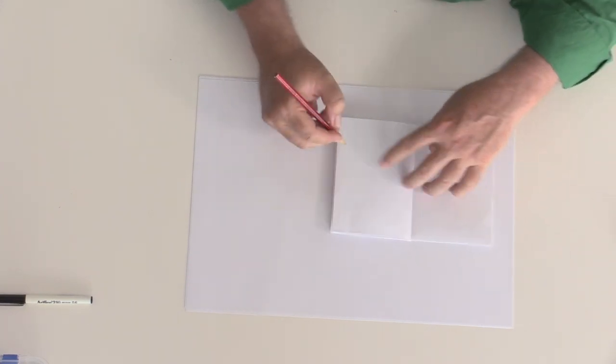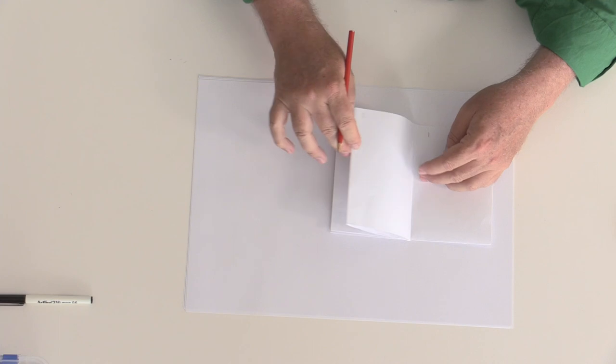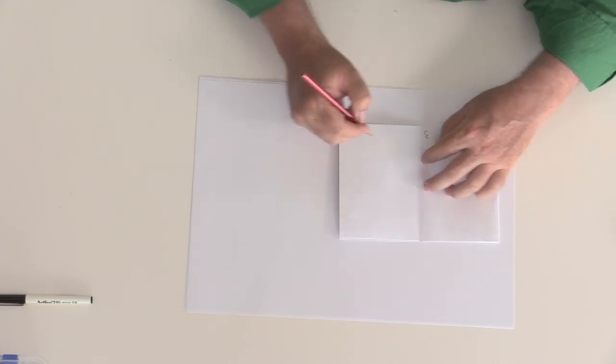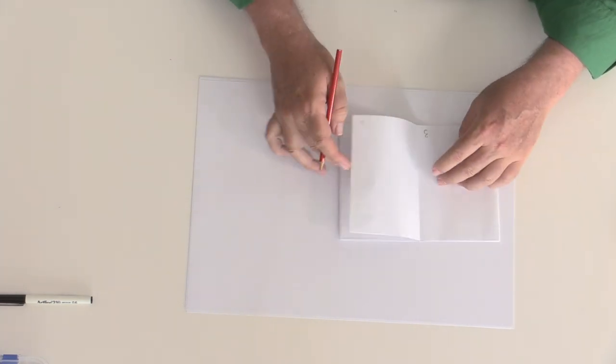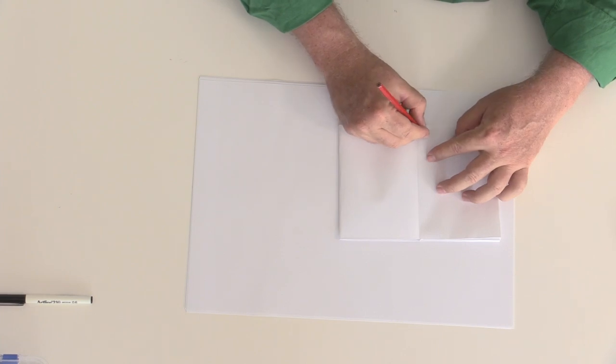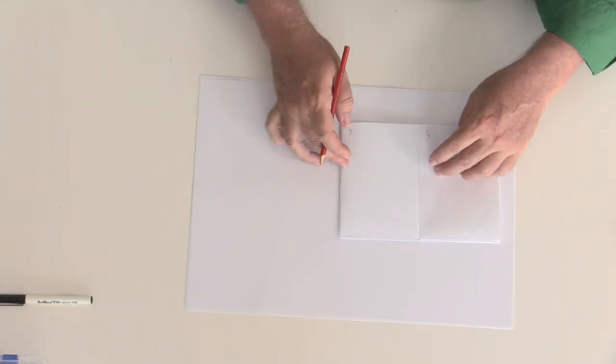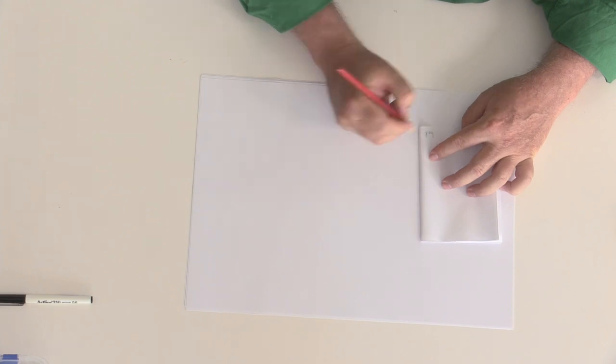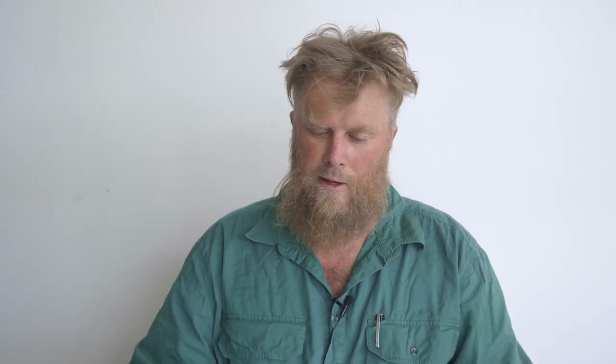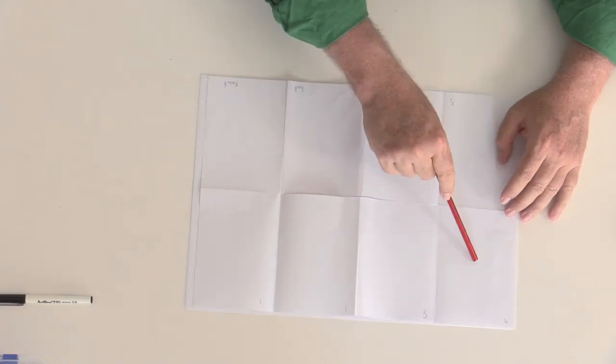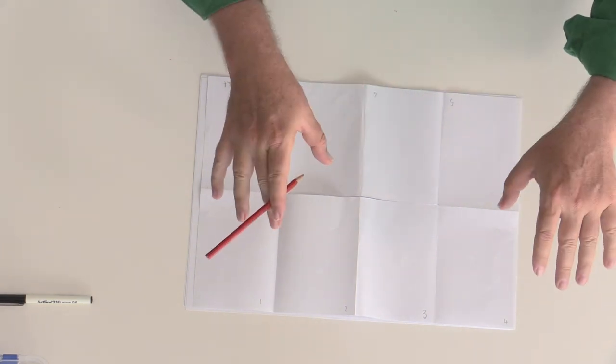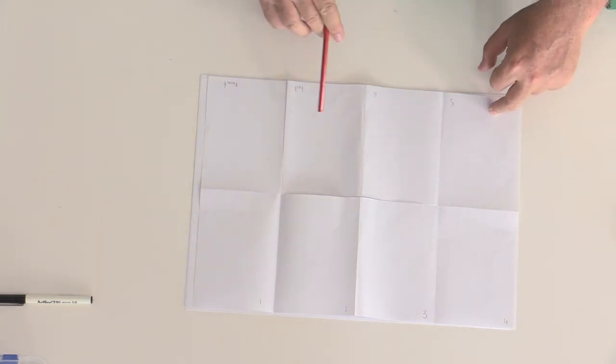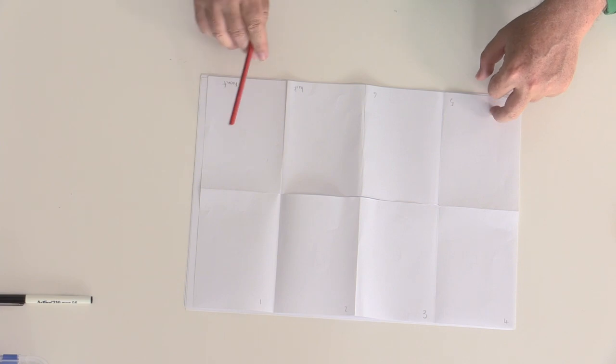Front, one, two, three, four, five, six and back. And then when I open it back out again I can see that I now have my pages numbered one, two, three, four upside down that way and then five, six, back and front on this side.